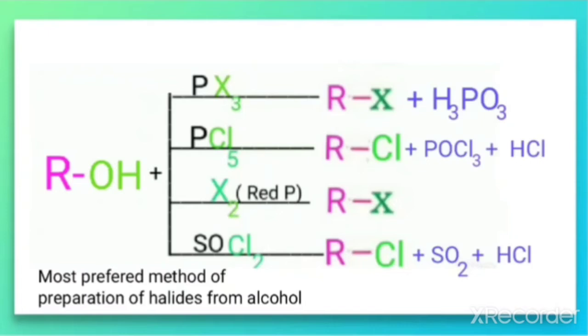In the case of PX3, the side product which is formed is a phosphorous acid. In the case of reaction with PCl5, the side product which is formed here, that is phosphorous oxychloride plus HCl.